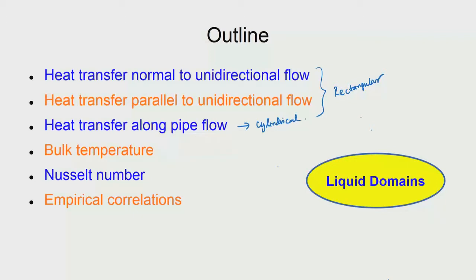We will also look at a spherical coordinate system while examining the concept of Nusselt number. Through these sessions, new concepts like bulk temperature and Nusselt number will be introduced. The session ends with empirical correlations of Nusselt number, which give us the heat transfer coefficient that can be used as a boundary condition in metallurgical problems.